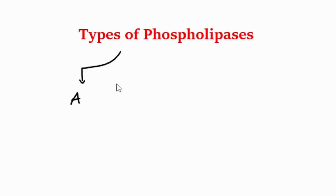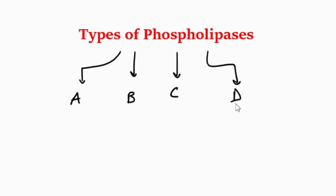The types include phospholipase A, phospholipase B, phospholipase C, and phospholipase D. Phospholipase A is further divided into A1 and A2. Let's see the individual action of each phospholipase.